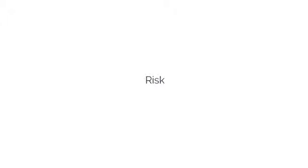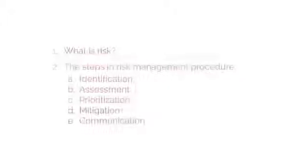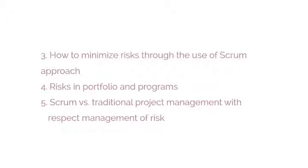As part of this chapter, we will discuss: what is risk? The steps in risk management procedure, such as identification, assessment, prioritization, mitigation, and communication. How to minimize risks through the use of the Scrum approach, risks in portfolio and programs, and finally, Scrum versus traditional project management with respect to management of risk.